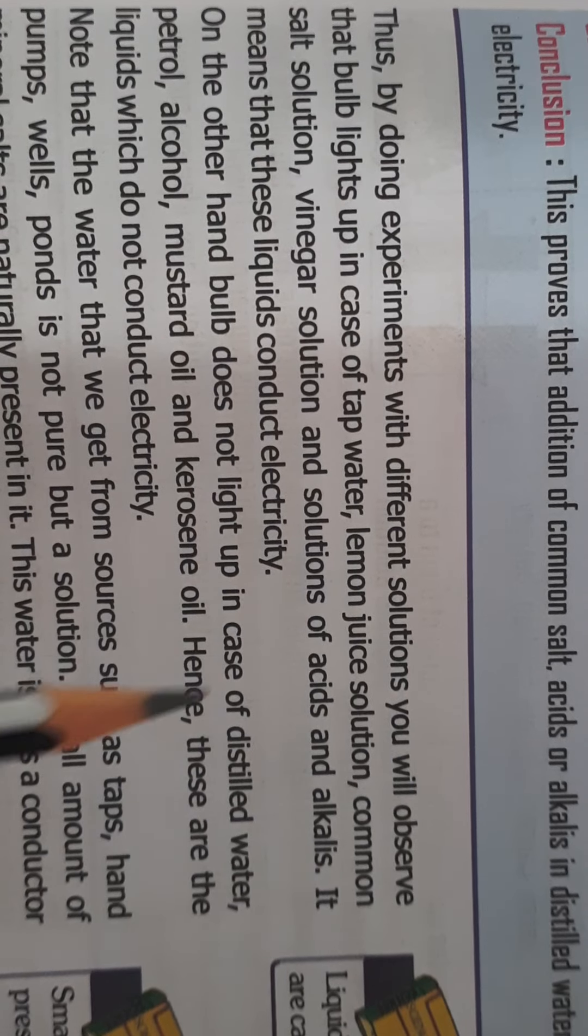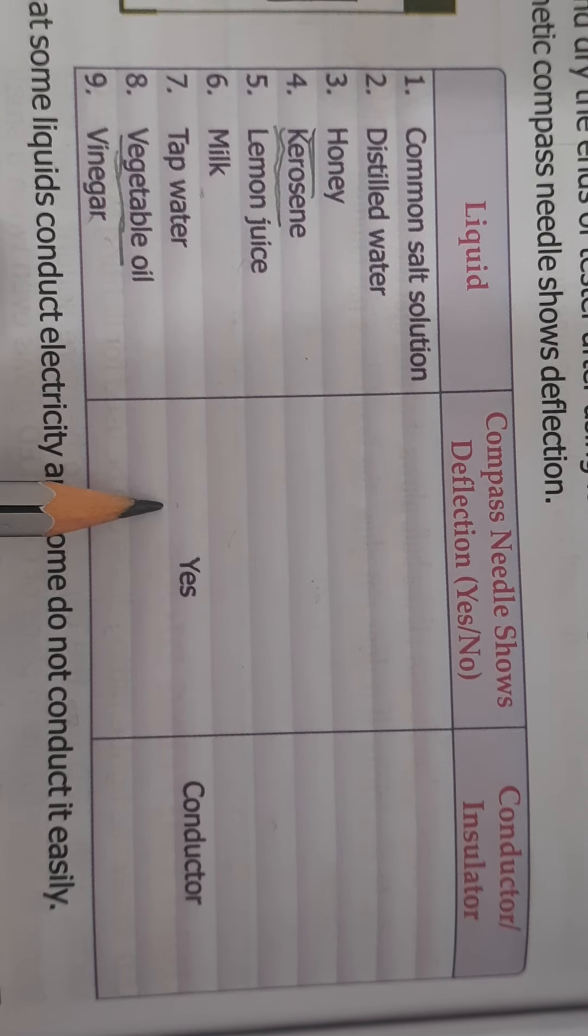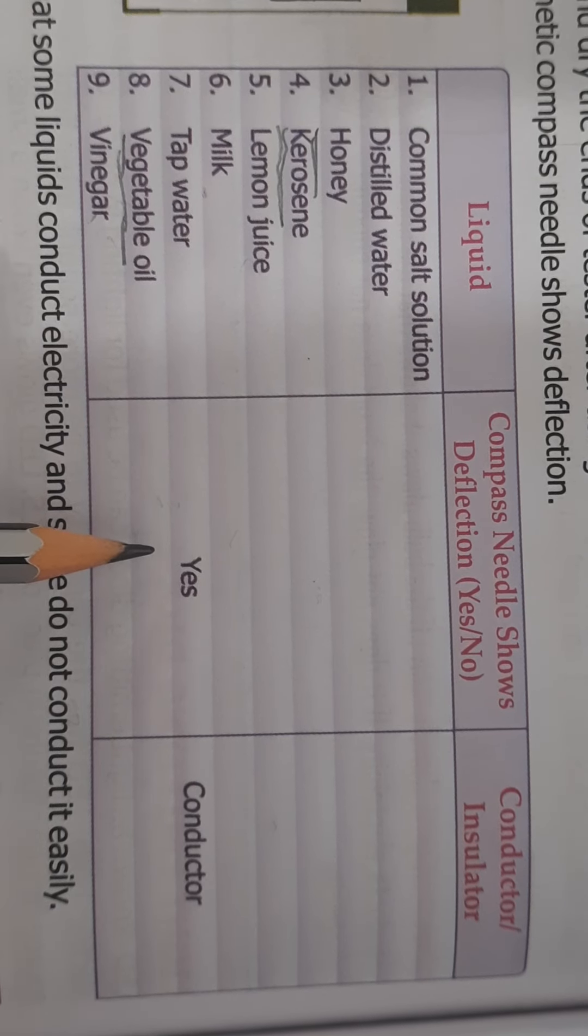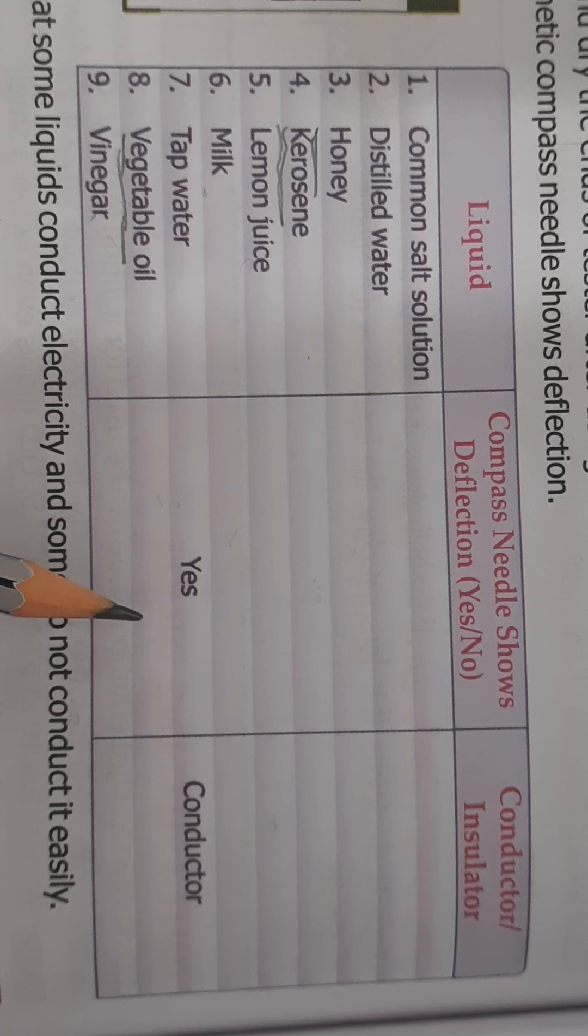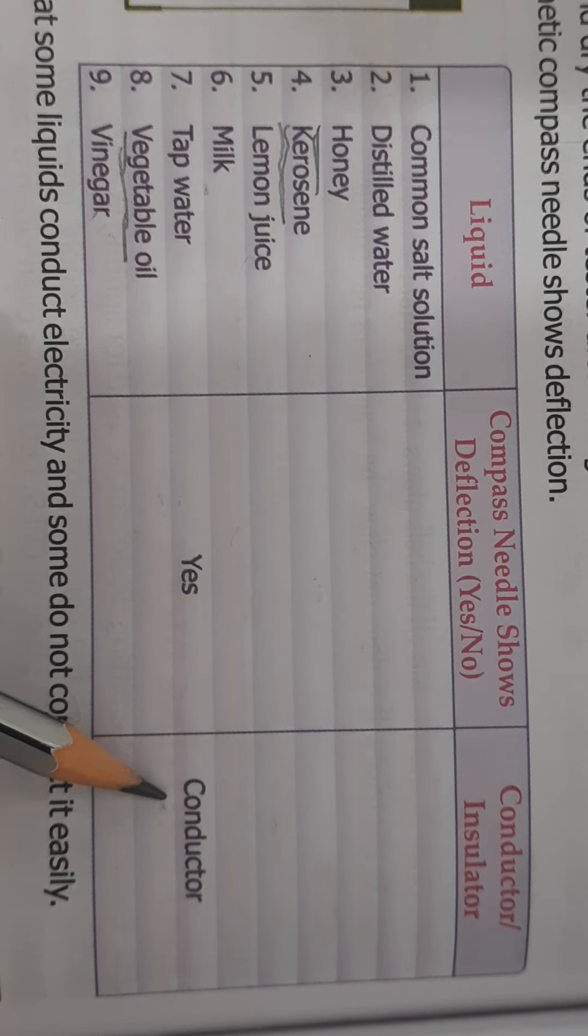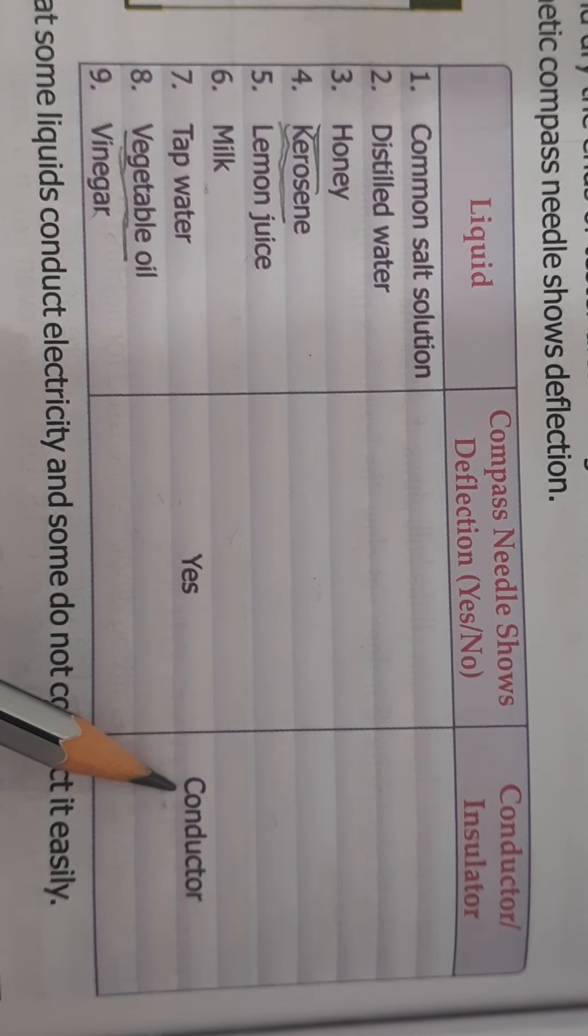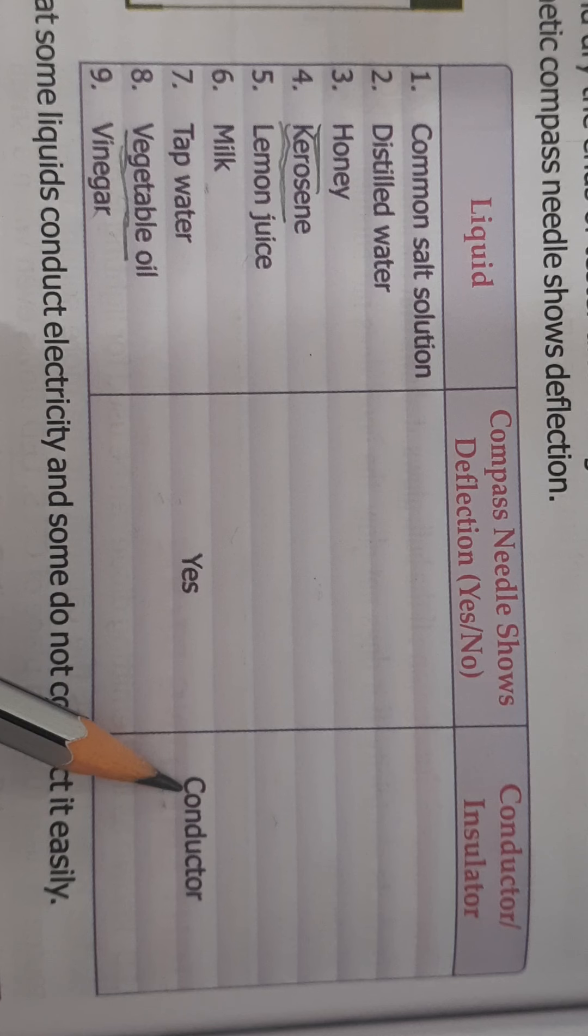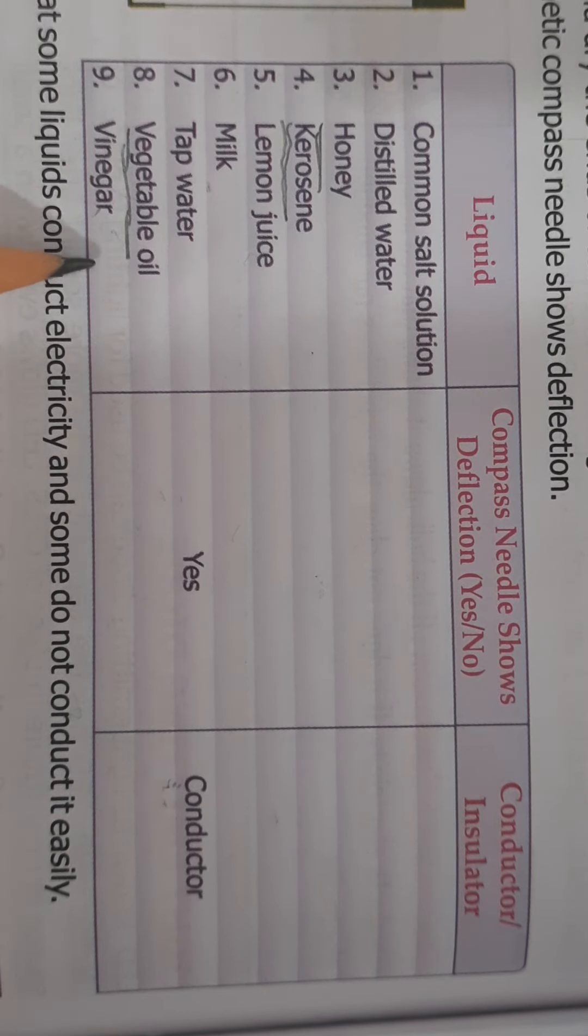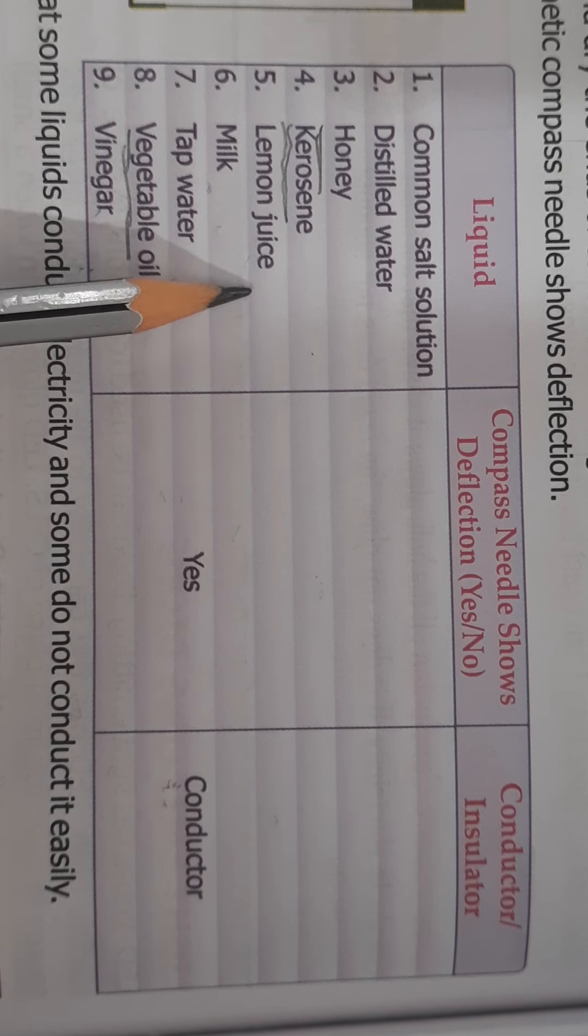By doing these experiments with different solution, we will see that the bulb lights up. In which cases will it light up? The bulb will light up in the case of tap water. Why in tap water? Because the tap water contains many kinds of impurities. It contains impurities. It also contains various kinds of minerals in it. So tap water is a conductor of electricity because it contains minerals, salts, which are naturally present in it. So it is a good conductor. In the same way, vinegar contains acid. Tap water contains minerals. Milk is lactic acid. Lemon juice is citric acid. All these will conduct electricity. Even common salt will also conduct electricity.